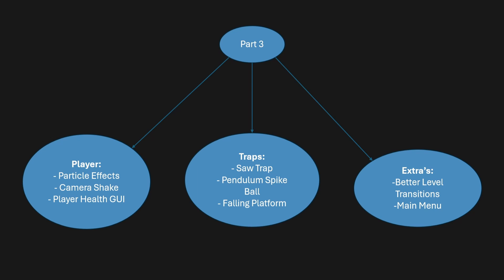And then lastly, we'll add some traps — a saw trap that moves around, a pendulum spike ball, and a falling platform. We'll go through the logic of doing each one of those. And lastly, we'll go through some extras again: better level transitions and a main menu.